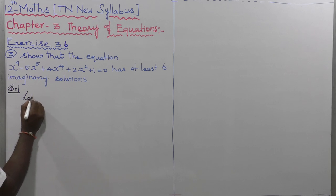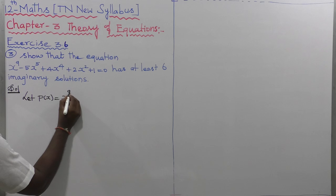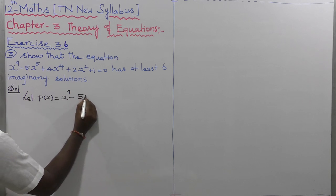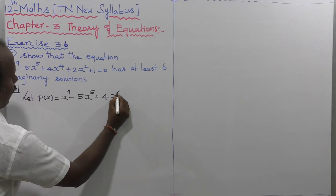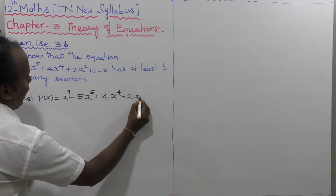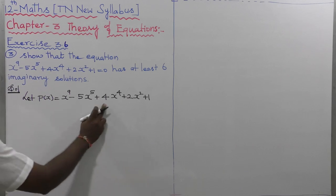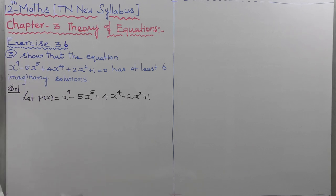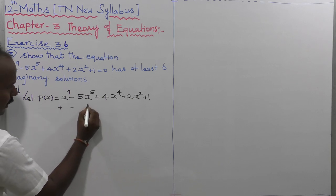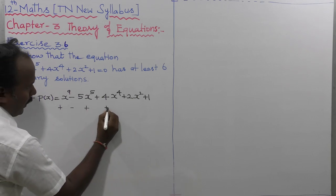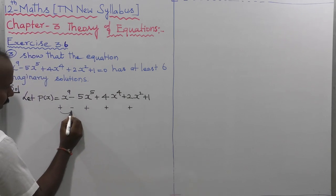Let us take the given equation: P(x) = x⁹ - 5x⁵ + 4x⁴ + 2x² + 1. Now let's look at the signs of the terms: plus, minus, plus, plus, plus.